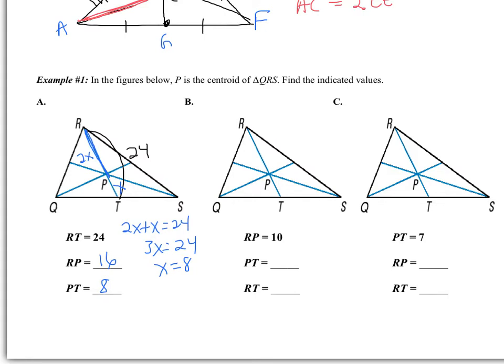In the next figure, we have RP is 10. Remember, RP is going to be twice whatever PT is. So again, RP is the 2X, PT is the X. So if RP is 2X and 10 is 2X, that means X equals 5. So I get PT equals 5. RT is the entire segment, so 10 add 5 is 15.